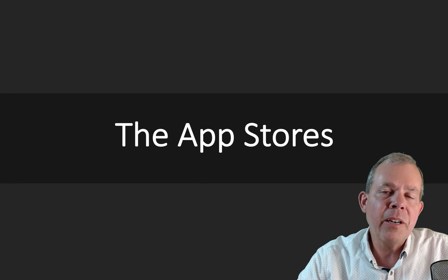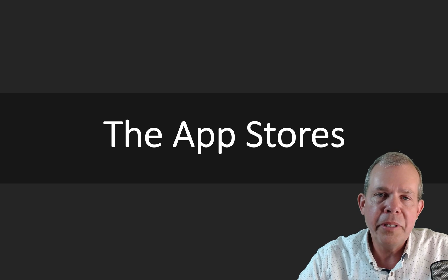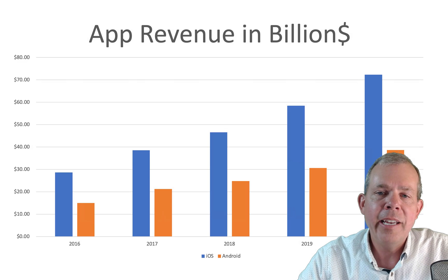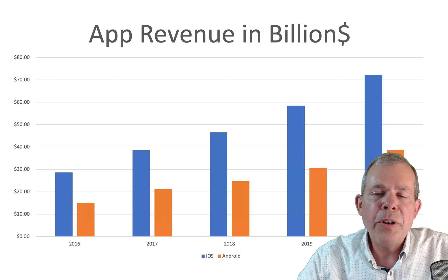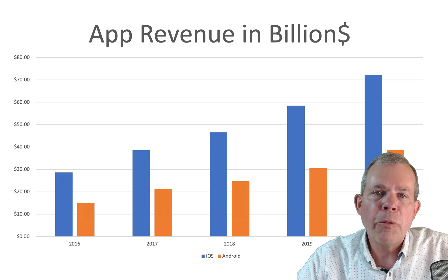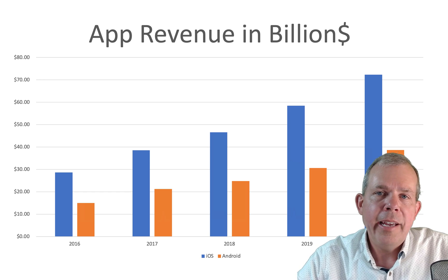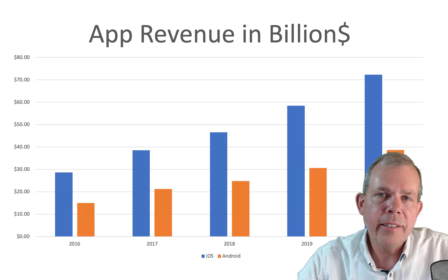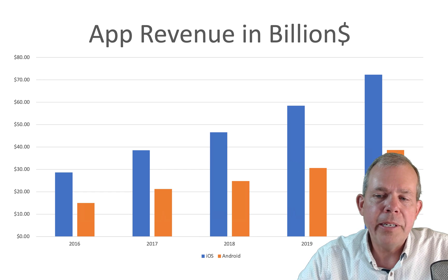Before we get into monetization, let's talk about the app stores and the type of customer you're going to get on each phone. There are really only two types of phones: Android and iOS. You'll be surprised how much more money comes from people running an Apple phone. iOS rakes in a huge amount of cash compared to Google when it comes to app store revenue. This comparison isn't entirely fair because it includes China, where Google doesn't sell apps but Apple does.